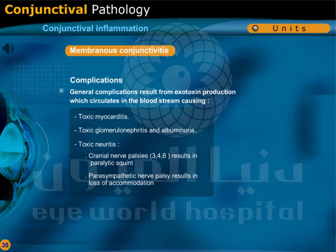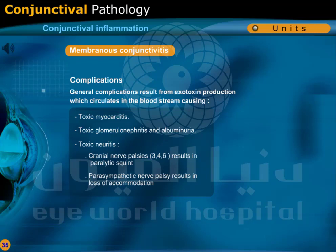Cranial nerve palsies of the third, fourth, and sixth cranial nerves result in paralytic squint. Parasympathetic nerve palsy results in loss of accommodation.